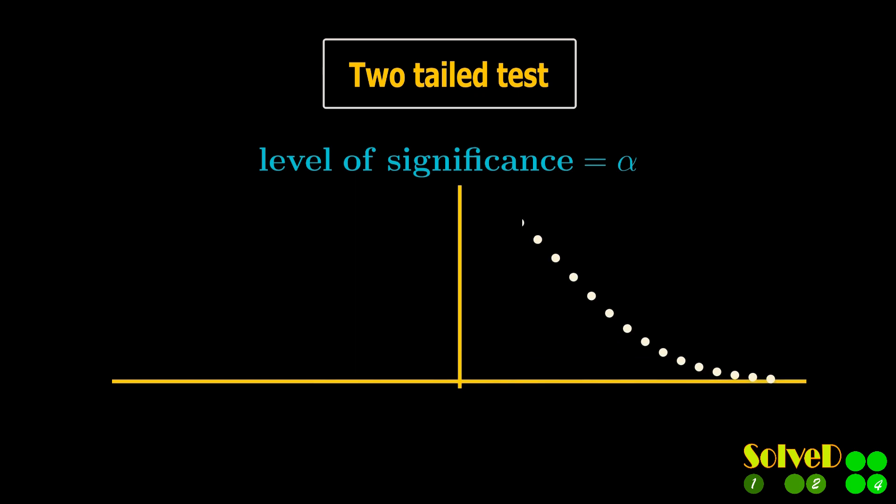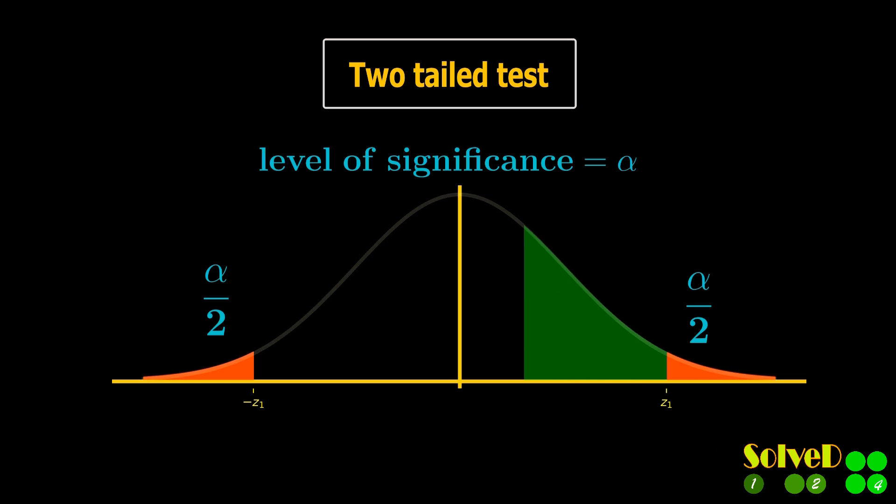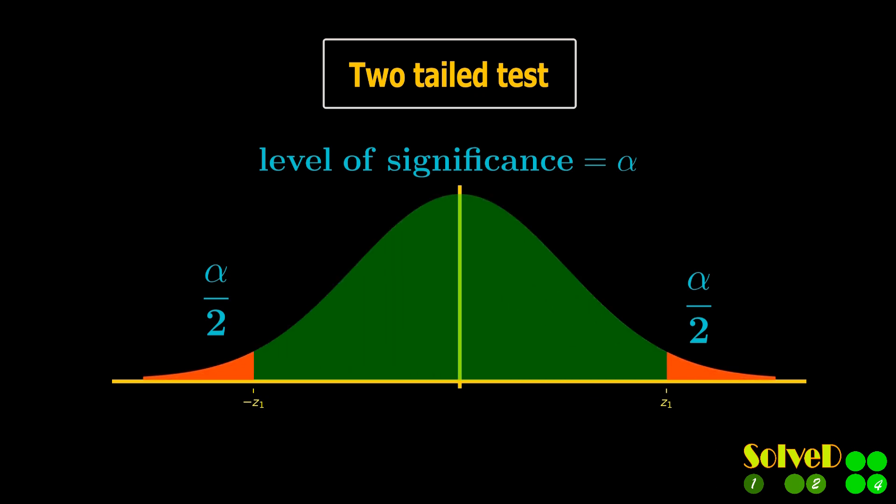For the level of significance equals alpha, for a two-tailed test, the area shaded under the two tails equals alpha by two. Now if the p-value, or the z-value, lies in this red-shaded area, then the mean has changed.